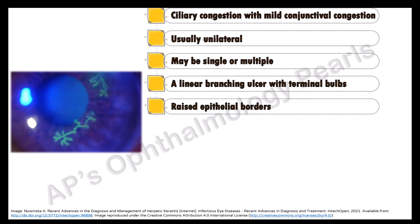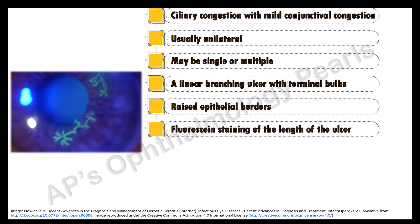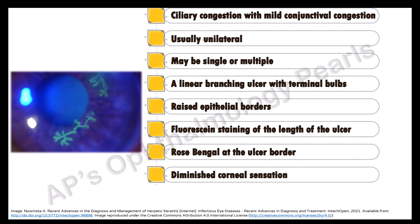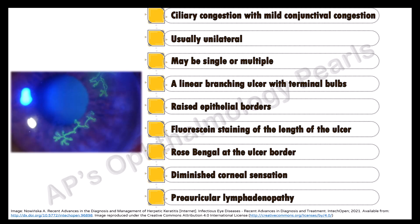The epithelial borders are raised. Fluorescent staining occurs throughout the length of the central part of the ulcer, whereas rose bengal, which stains devitalized cells, is taken up by the swollen epithelial cells at the ulcer border. There is diminished corneal sensation and pre-auricular lymphadenopathy.